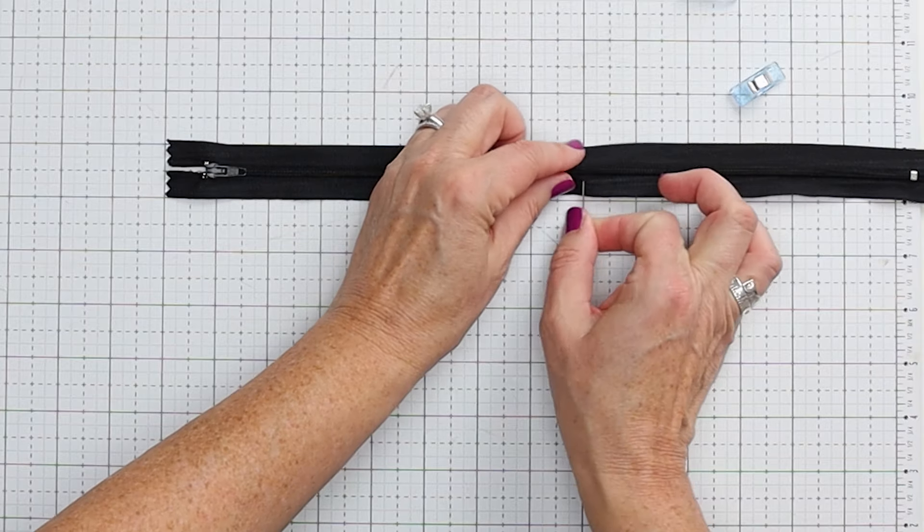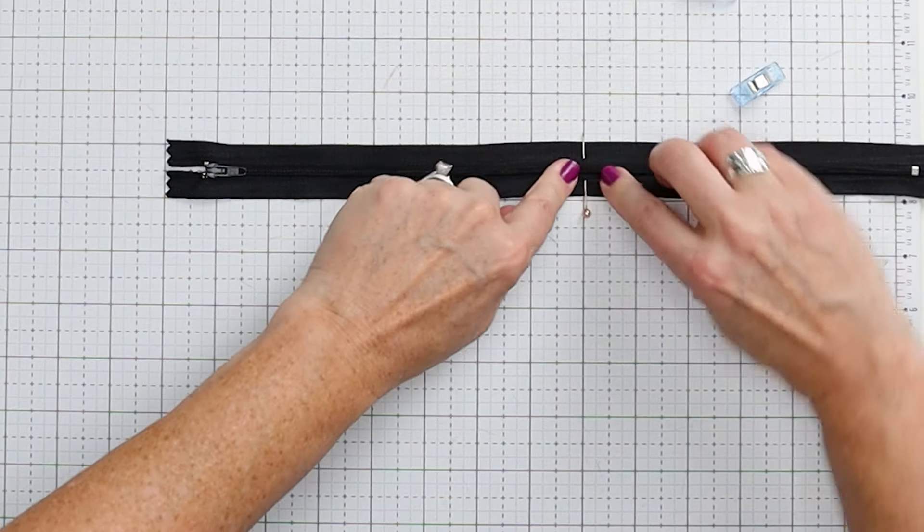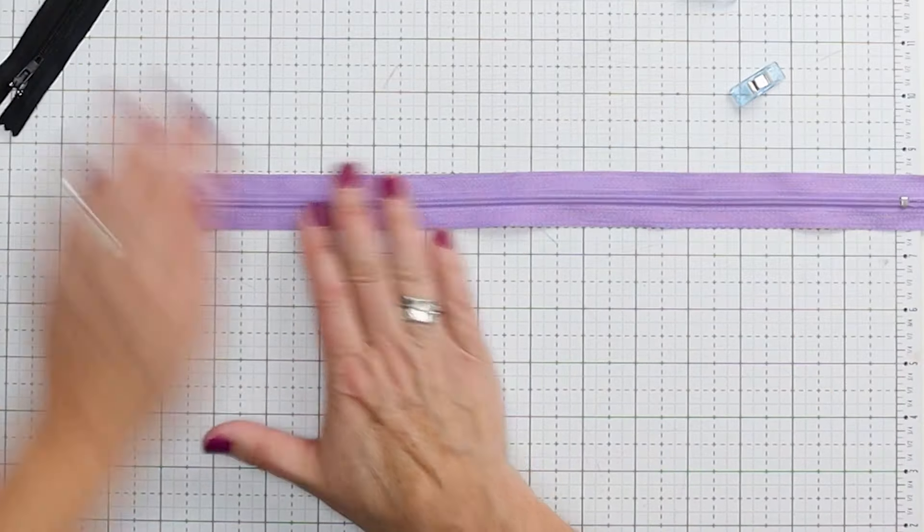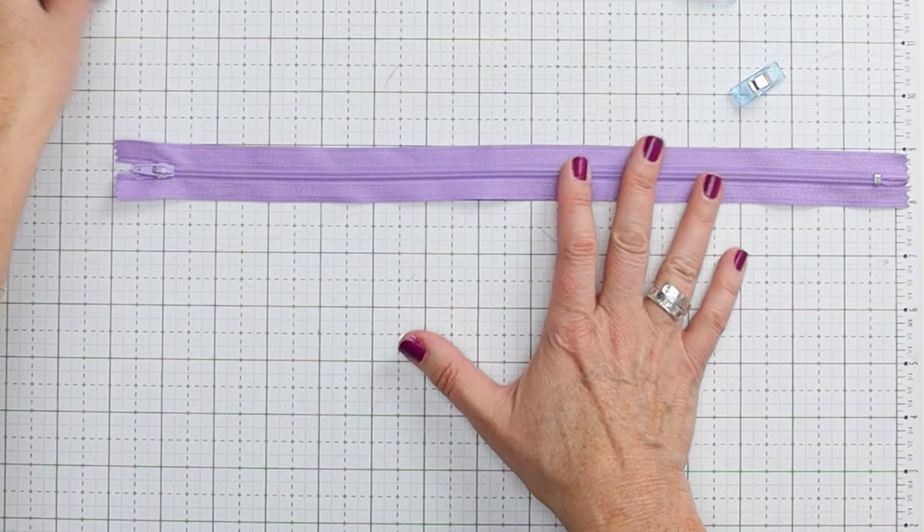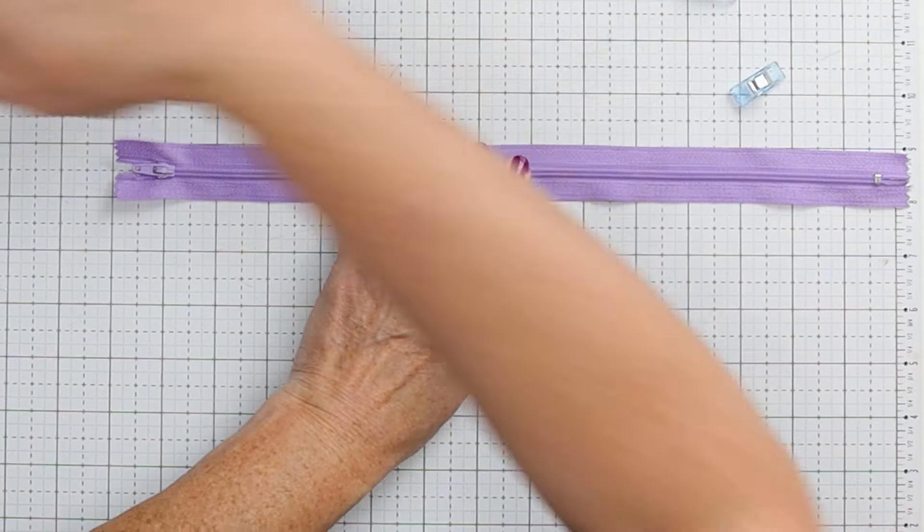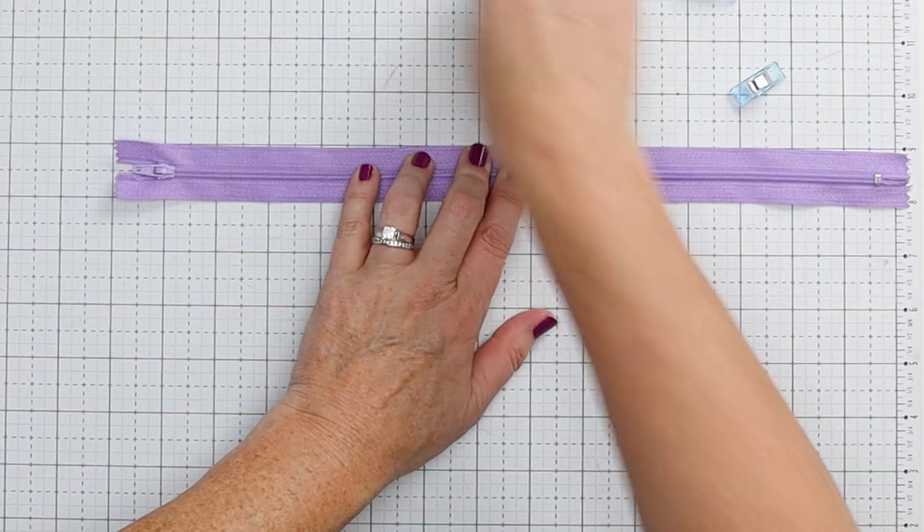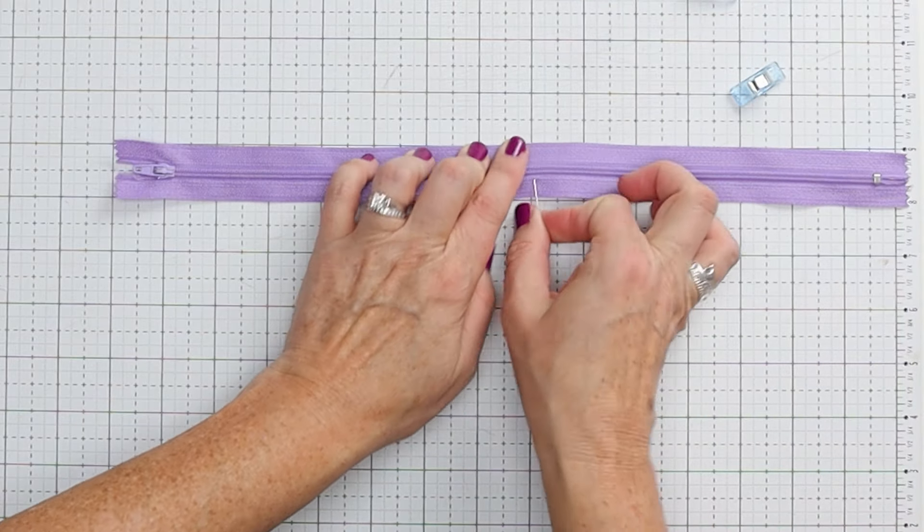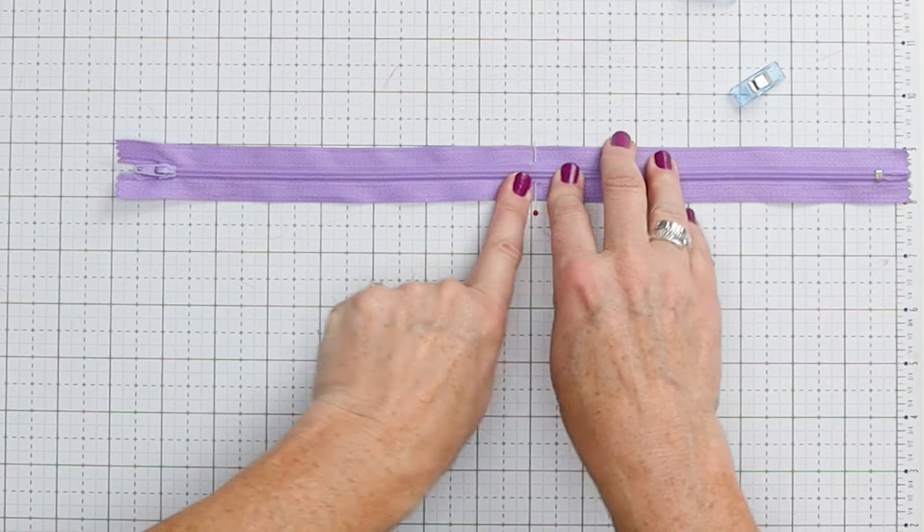So I'm going to put a pin right there and that is just going to let me know where I'm going to tack that. We are not doing a black zipper. We are doing a purple zipper. So let's try that again. I'm going to measure eight inches from the end. I'm going to put a pin so I know where to tack it.